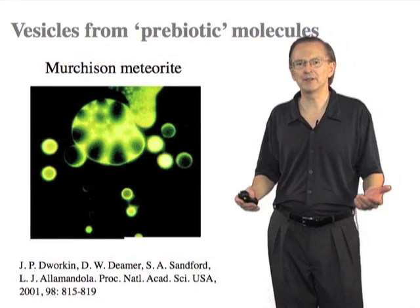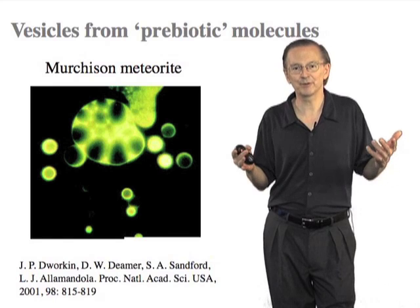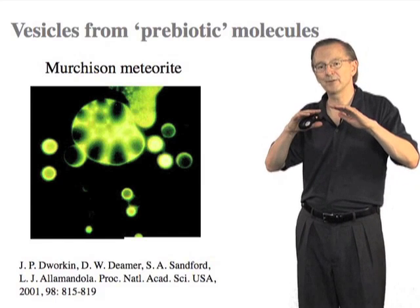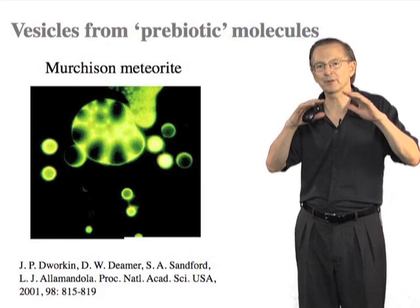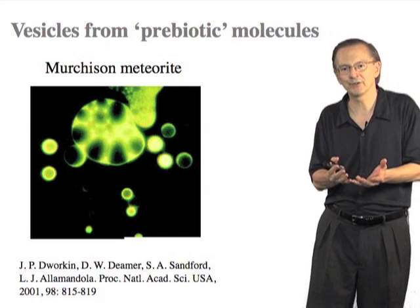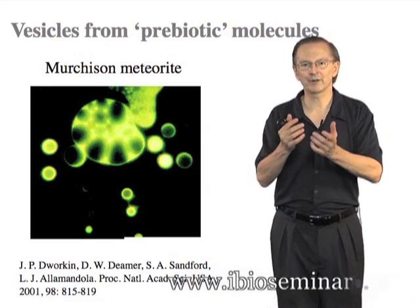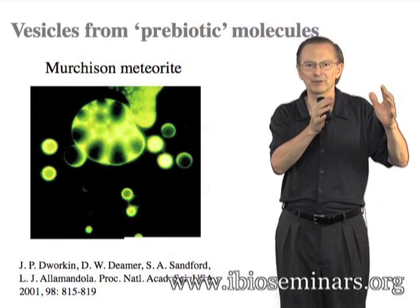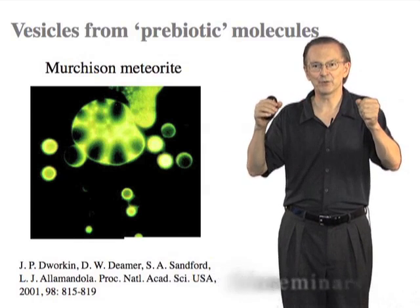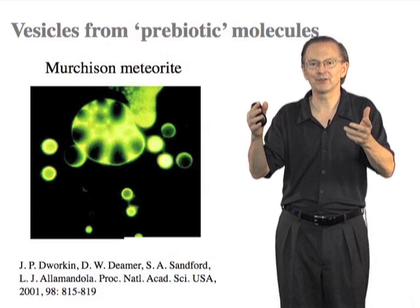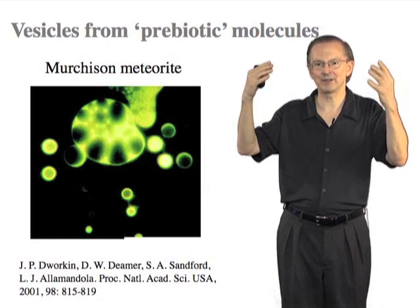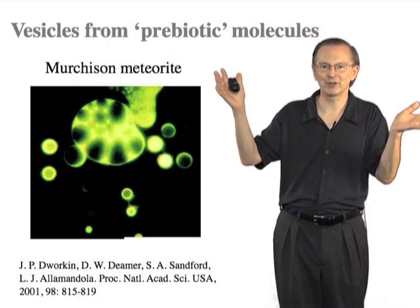What about some of the other molecules that we need to build our primitive early cell? We need to have lipid-like molecules, amphiphilic molecules, that can self-assemble into membranes and generate compartments spontaneously. These are molecules that have one part that likes to be in water and another part that doesn't. Those preferences are balanced by forming membranes, in which the nonpolar parts are on the inside and the polar parts face out into the water.